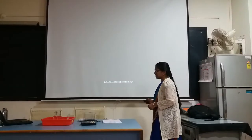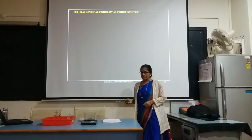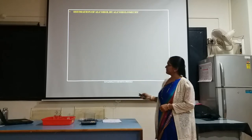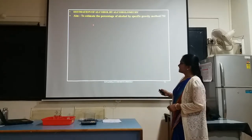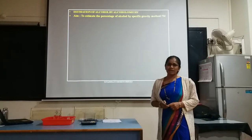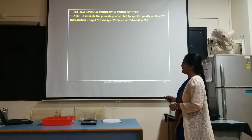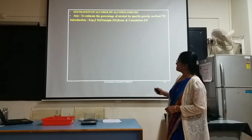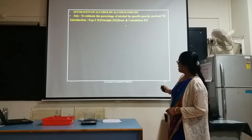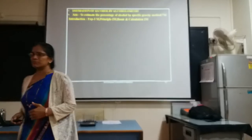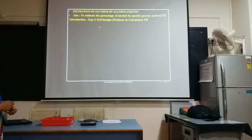Now let us go through the specific gravity method. Today's experiment is estimation of alcohol by alcoholometry. The name of the experiment is: to estimate the percentage of alcohol by specific gravity method, which carries 7 marks. In these 7 marks, the experiment carries 3 marks, principle 2 marks, and result and calculation 3 marks. So you need to focus on the distribution of marks and you need to write this in the examination.